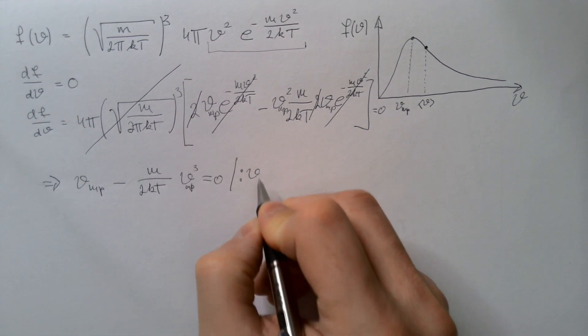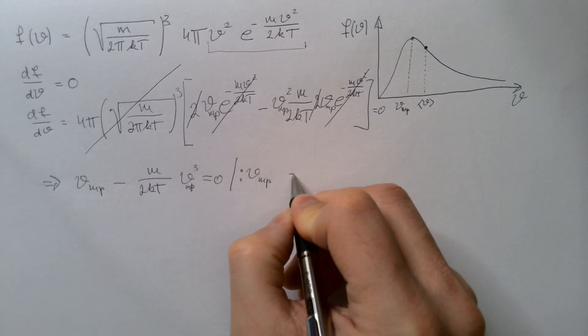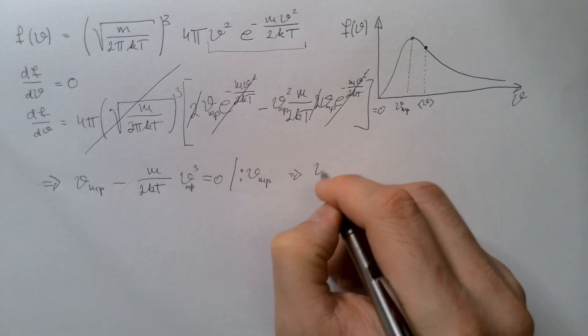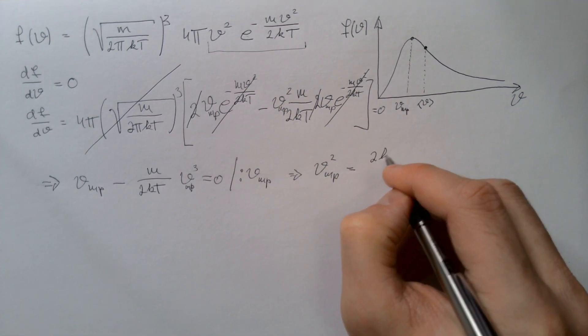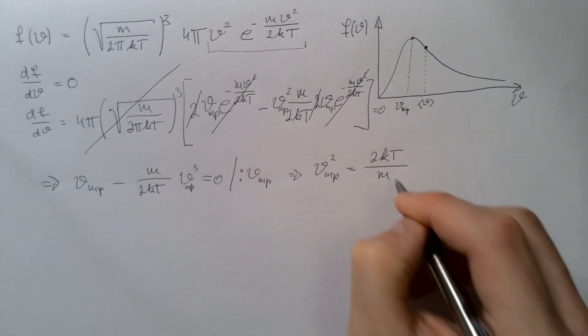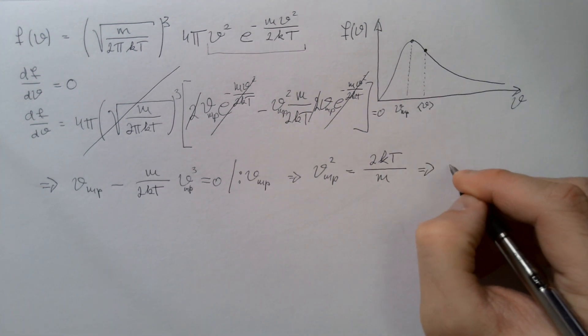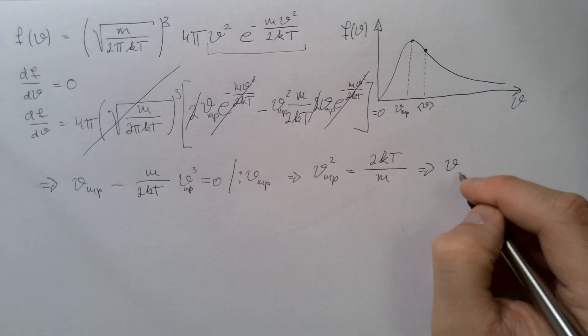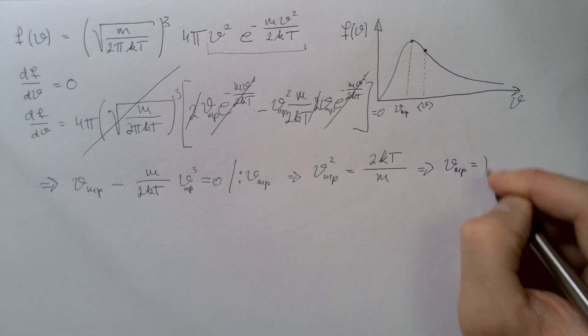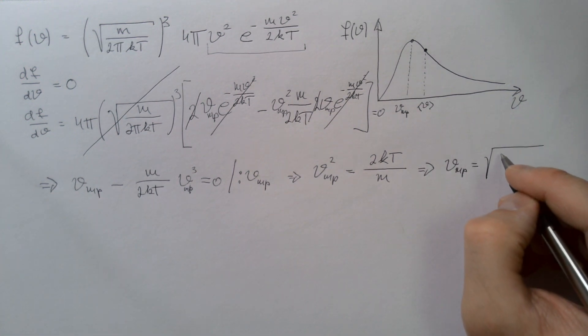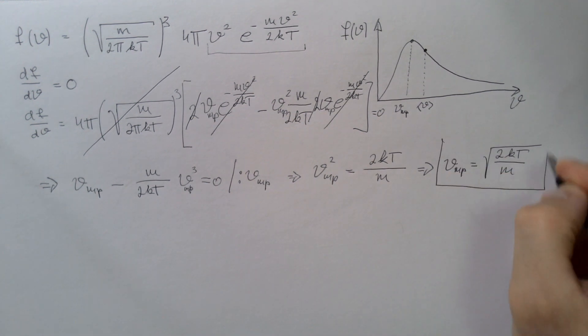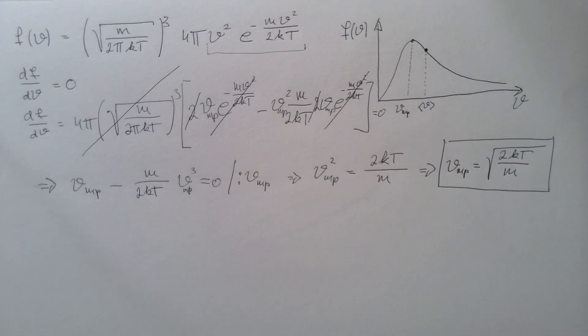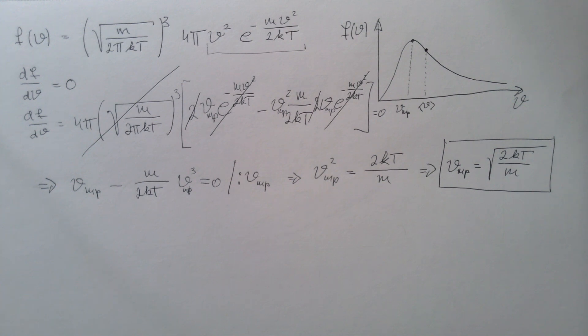Or, I can further divide this once by vmp, and get that vmp squared is equal simply 2kt divided by m. This is further equal, upon taking square root, that vmp is equal square root of 2kt divided by m. And this is our most probable speed of atoms in an ideal gas, such as air in our rooms.